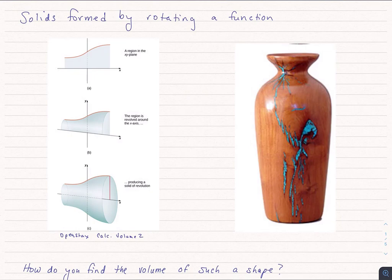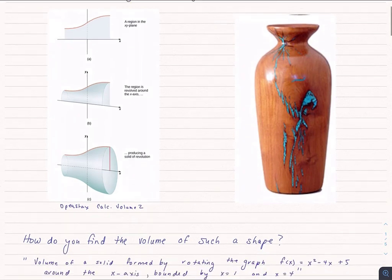this vase could have been made on a lathe and it could be described by a function on its outside shape. It could have been rotated around that x-axis, and then to find the volume we could do the same thing that we've done in the past. So how do we find a volume like this?